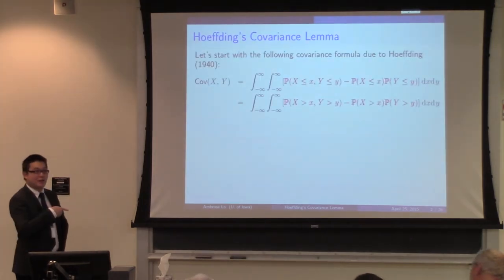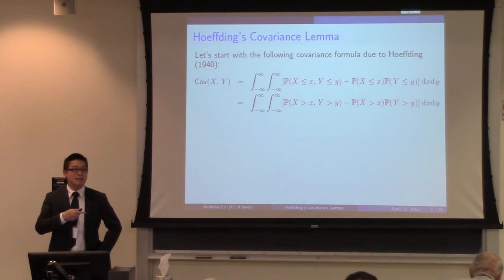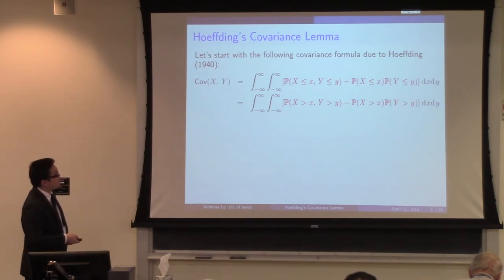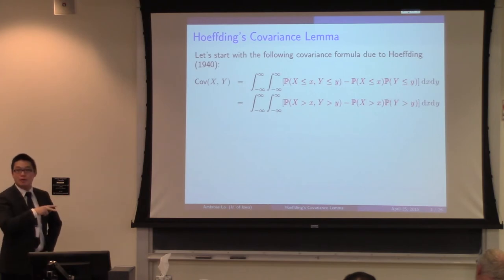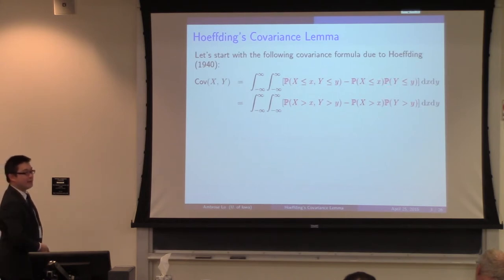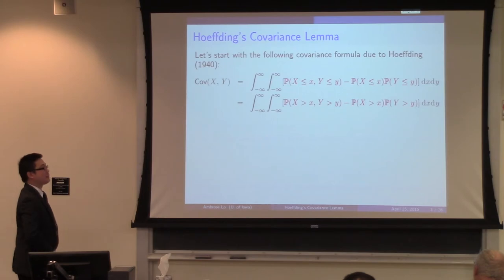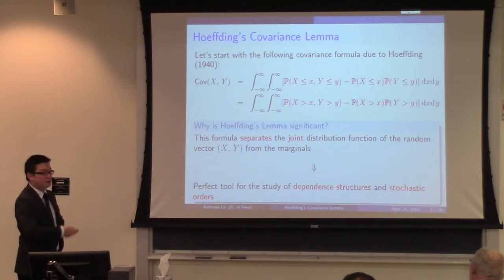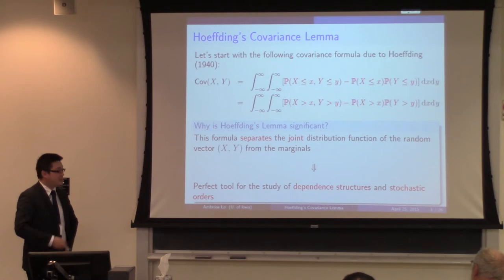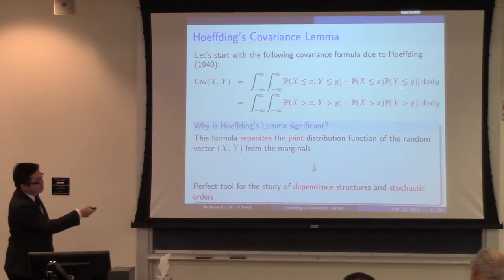So what exactly is Hoeffding's lemma? In the literature we have many different kinds of covariance formulas serving different purposes. What Hoeffding's formula tries to do is to express the covariance between two random variables X and Y as an integral comparison between the joint CDF and the product of the marginal CDFs. Or we can replace CDFs with survival functions — joint survival function and the marginal survival function. This formula is good because it separates the joint distribution from the marginal distribution, making it a perfect tool for the study of dependence structures and stochastic orders. We can treat the dependence part and the marginal part separately.